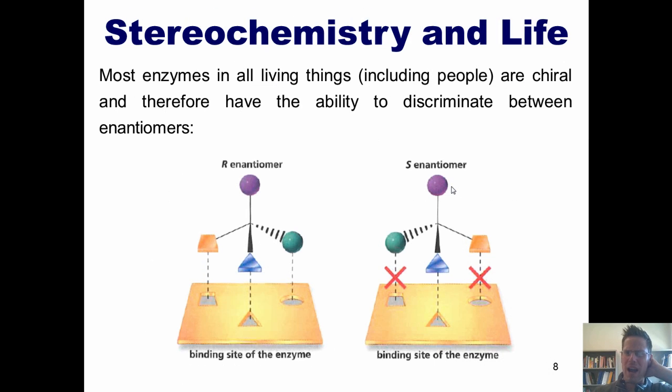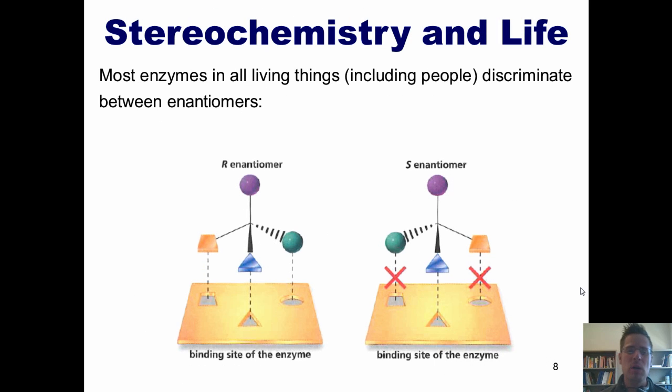You might wonder why. As it turns out, most enzymes in all living things, including people, discriminate between enantiomers. The reason is because most enzymes have very specific three-dimensional shapes. Thus, one enantiomer might react with one enzyme in one way, while the opposite enantiomer will react in a completely different way. This is why, when we have medicines that possess stereocenters, it is often crucial for us to assemble them in a way that only gives us one enantiomer and not the other.